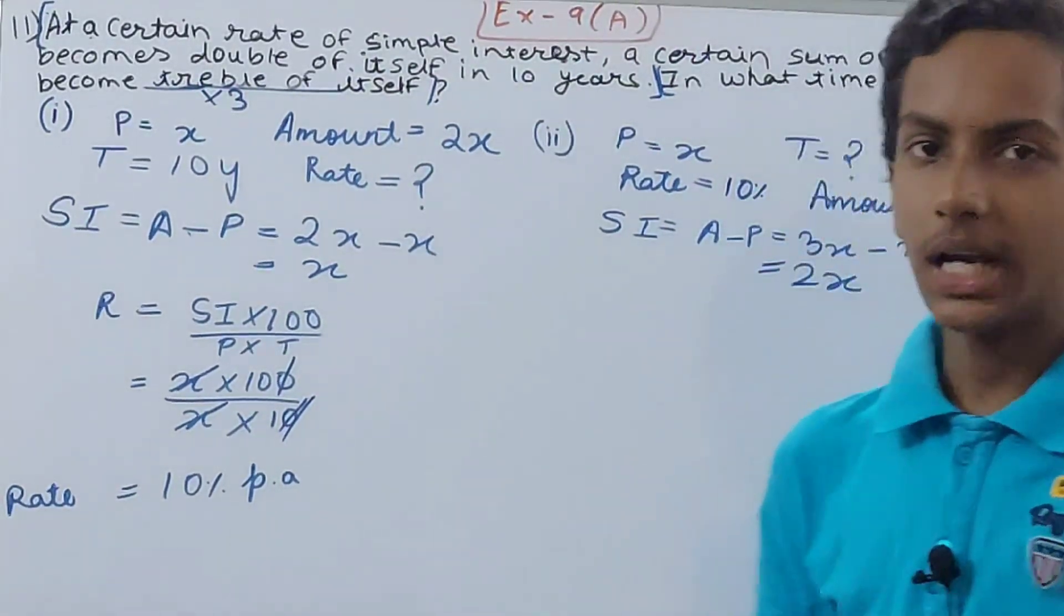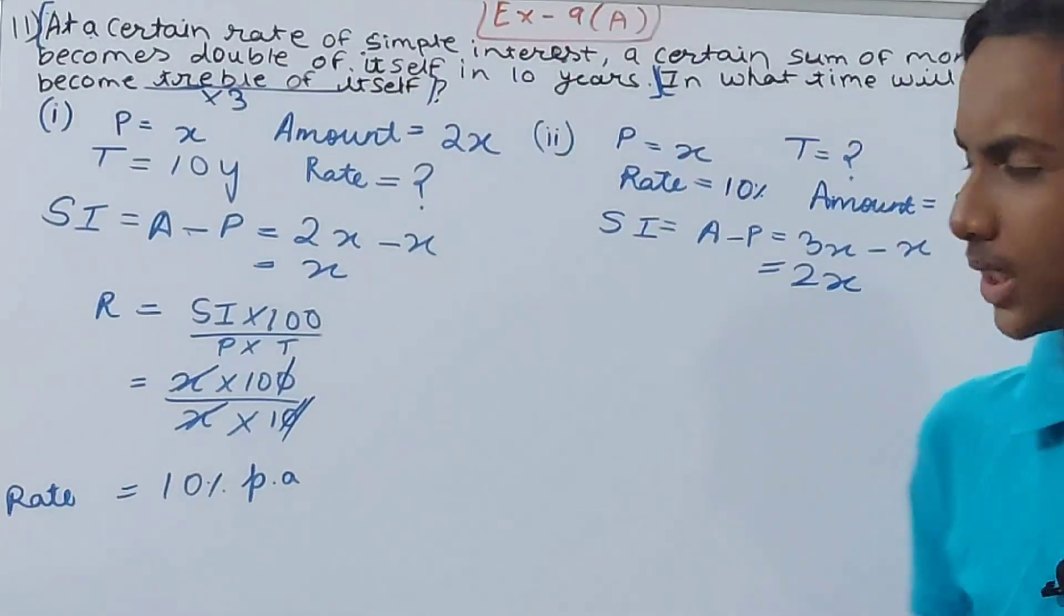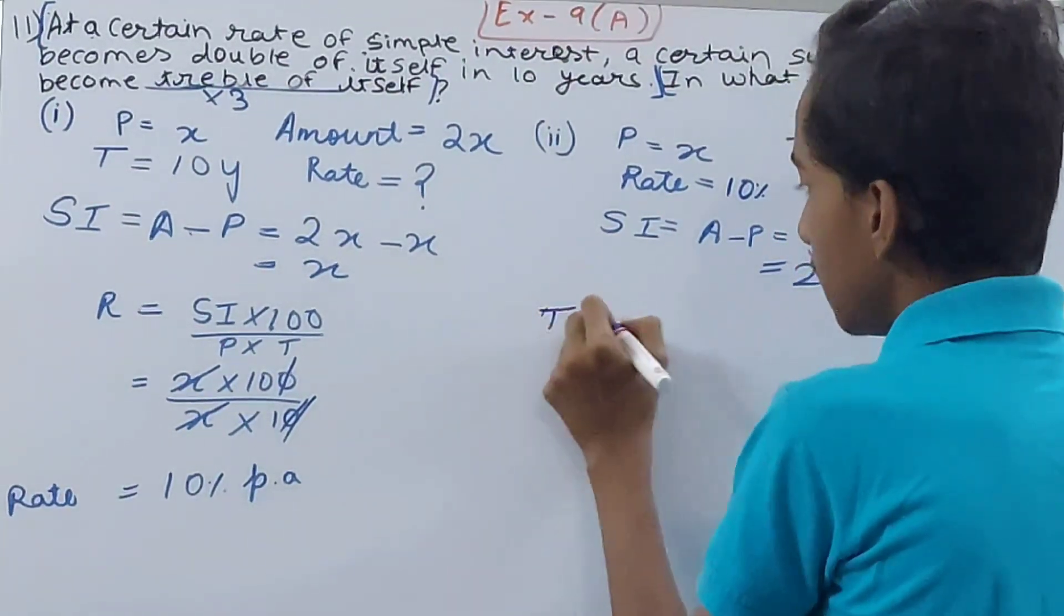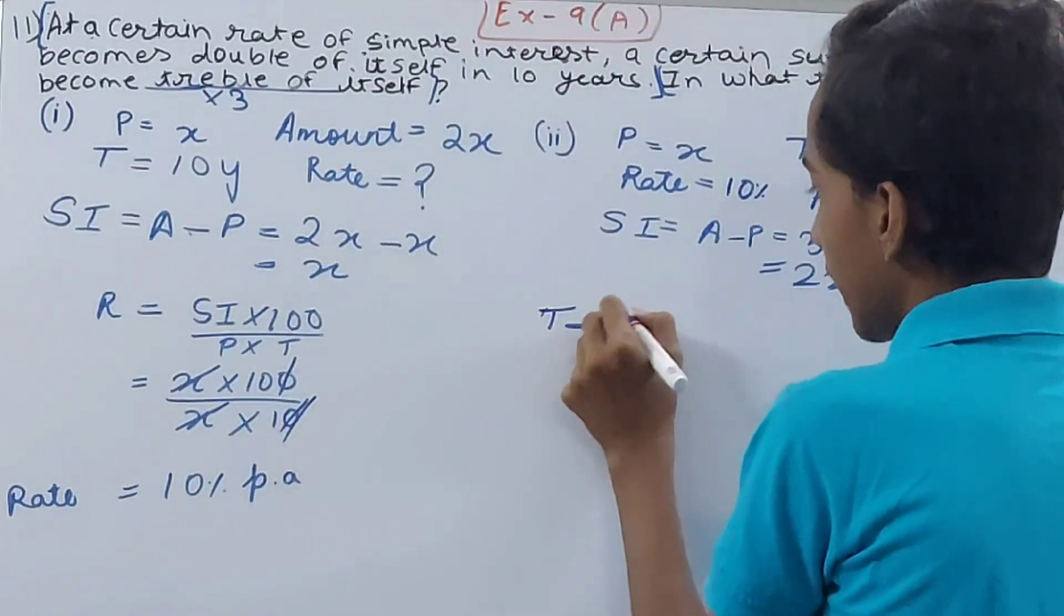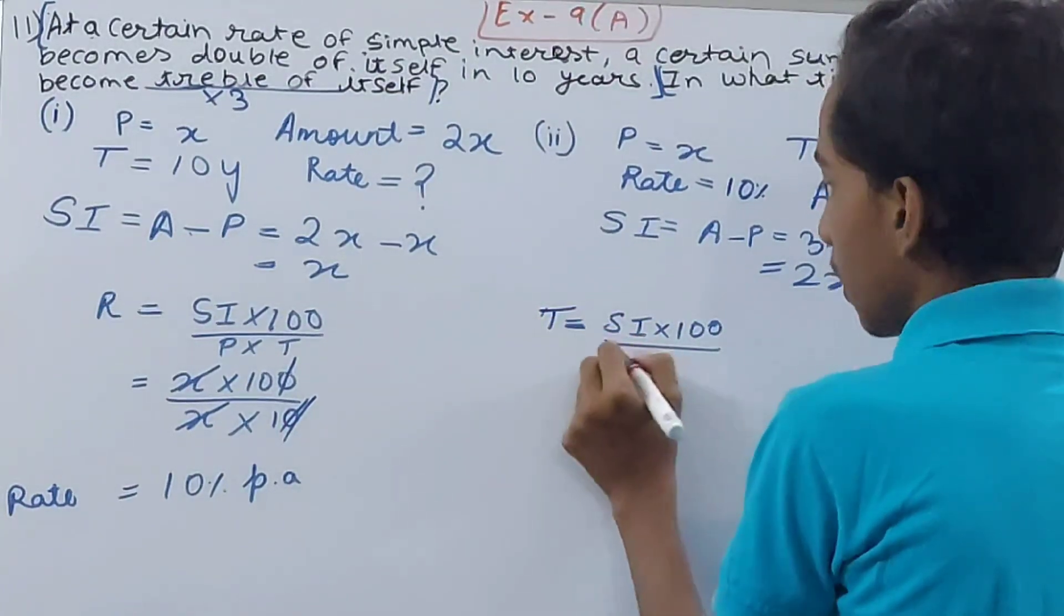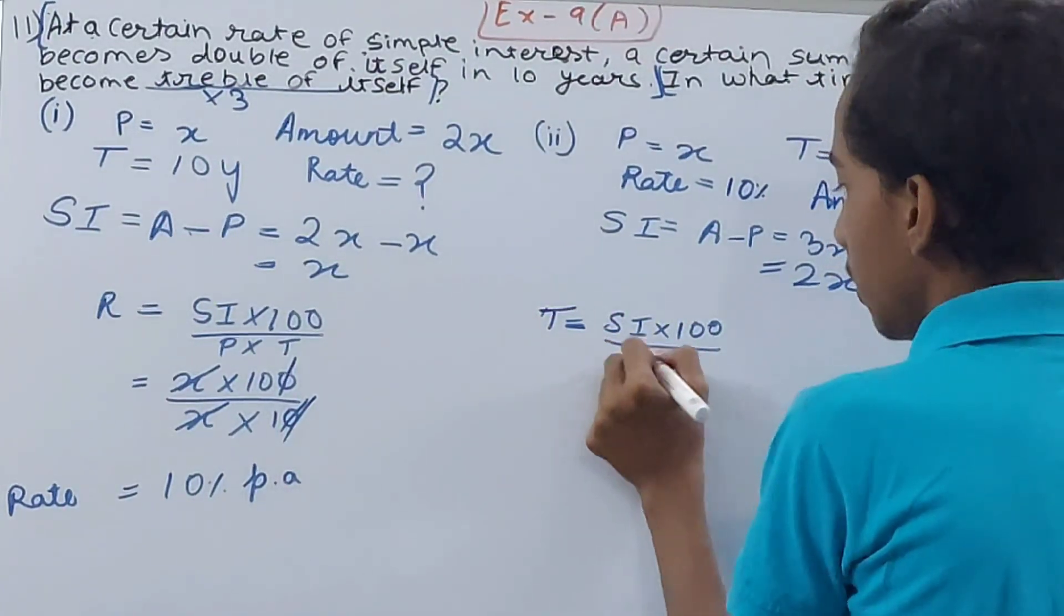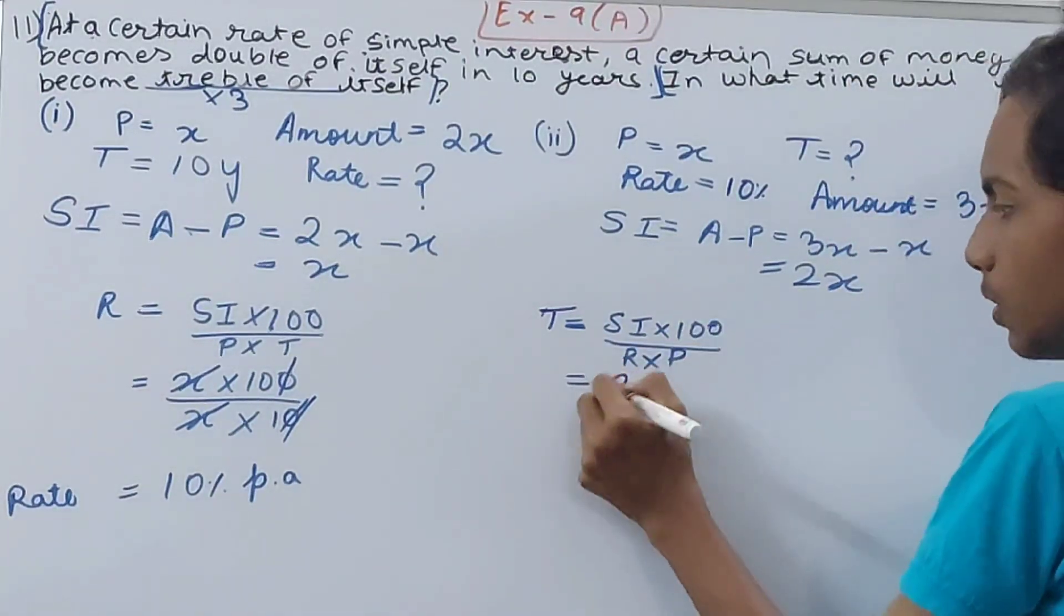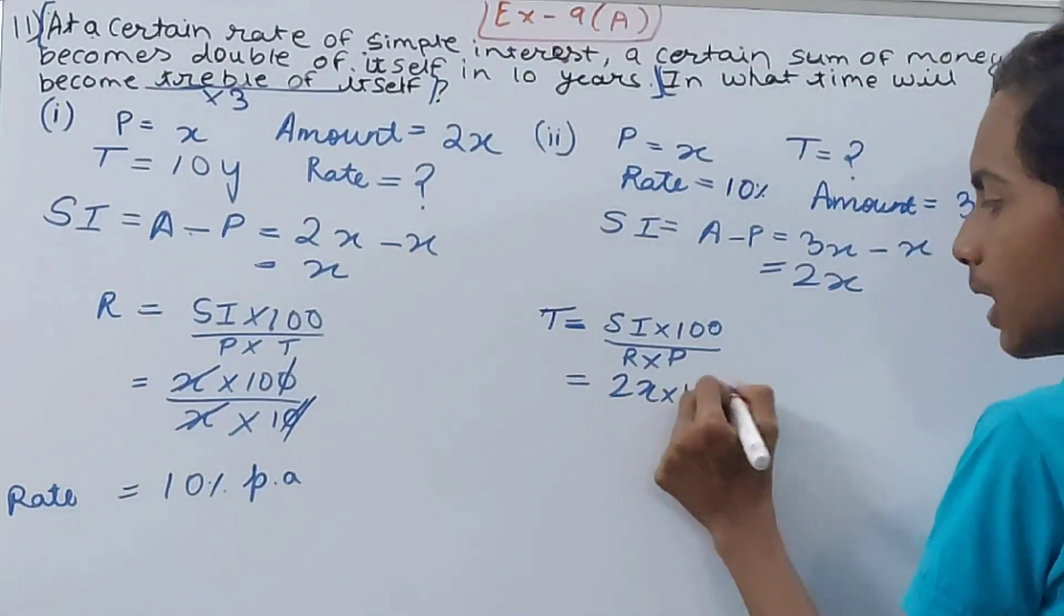We know it is what, SI into 100 upon your rate into principle, P into R, R into P, whatever. SI is 2x into 100 upon rate is 10 percent and principle is x.